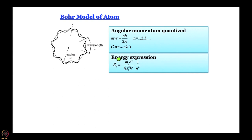Remember, only certain energy levels are allowed, so you cannot talk about a continuous distribution of energies. Eₙ equals Mₑe⁴ divided by 8ε₀²h², multiplied by 1/n². This energy expression takes us directly to the Rydberg constant, because the lines seen in the spectra — whose energies are given by the Rydberg equation — come as a result of the electron jumping from one stationary state to another, according to Bohr. So it is going to be this constant multiplied by (1/n₁² − 1/n₂²) — the Rydberg formula.